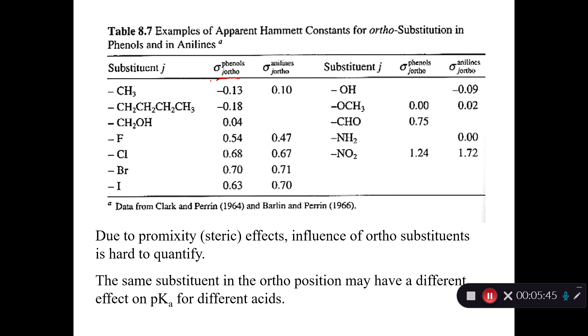So we do have some tables of Hammett constants for substituents in the ortho position. But notice the Hammett constants are different depending on whether you're talking about phenols or anilines. And if you're dealing with benzoic acids, well then you're out of luck. You just don't have Hammett constants in this table to do those. You might be able to find them in literature but they're not given in the textbook. So due to these proximity and steric effects, the influence of those ortho substituents is really tough to quantify, which is why we have to do it on a case-by-case basis.